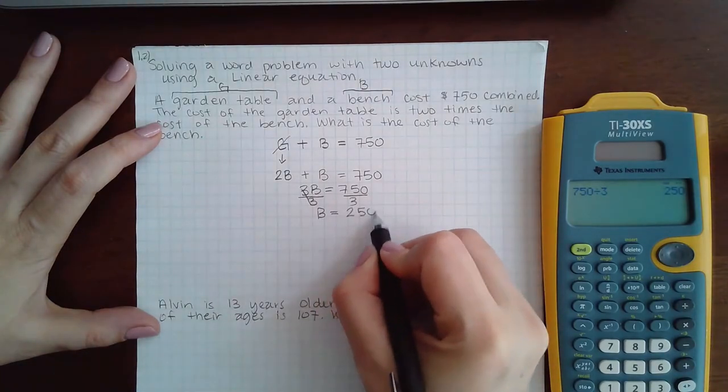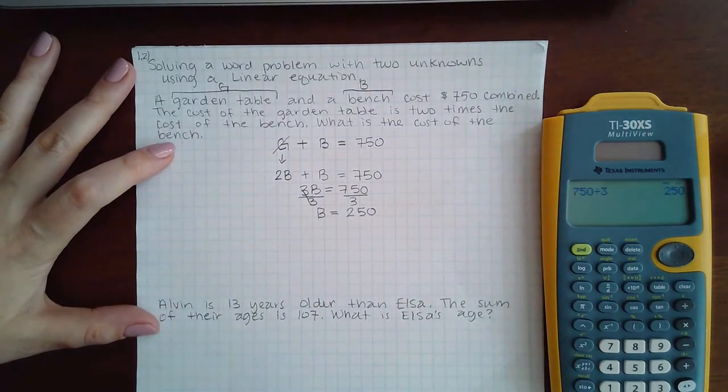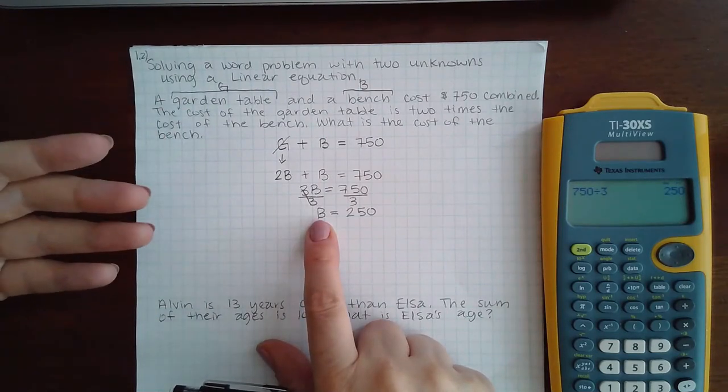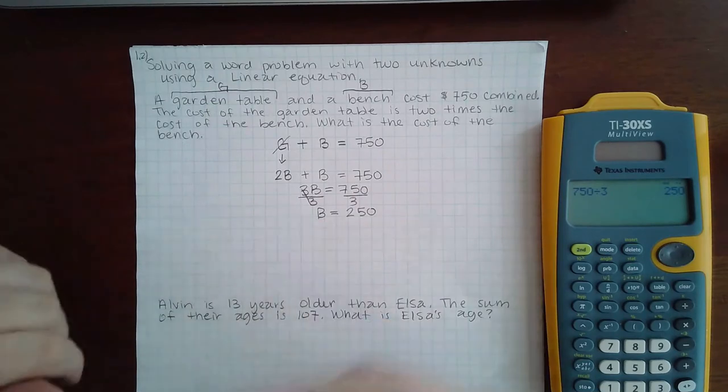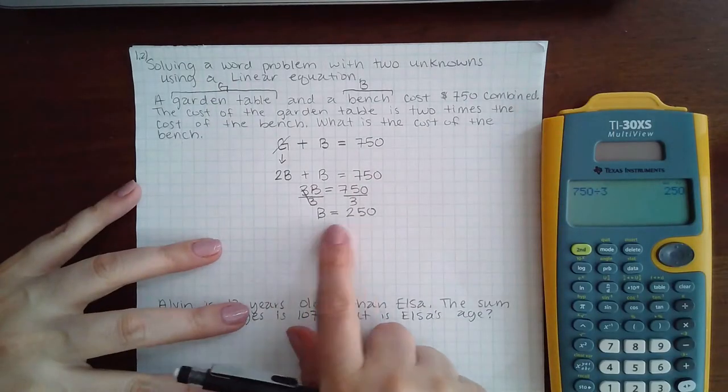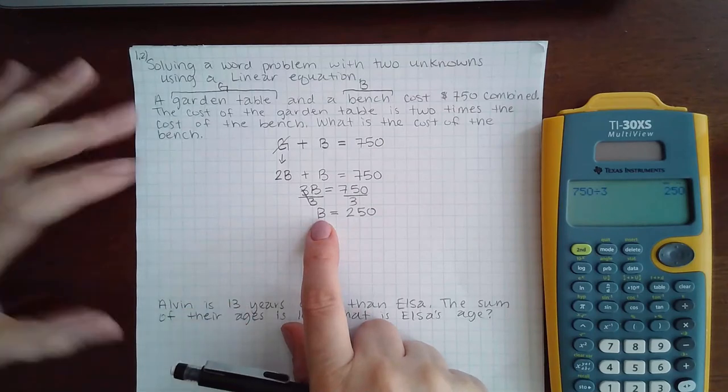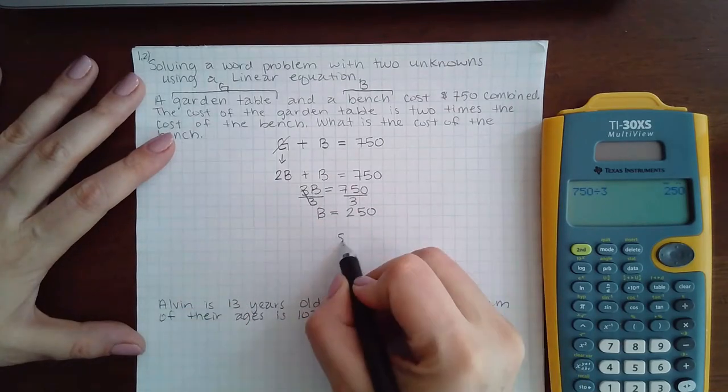It does say what is the cost of the bench, and since I used identifying letters such as G for garden table and B for bench, it's very evident what this variable stands for. B stands for the cost of the bench and that's $250.